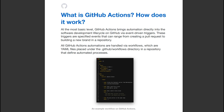All GitHub Actions automations are handled via workflows, which are YAML files placed under the .github/workflows directory in your repository. These YAML files define the automation process.